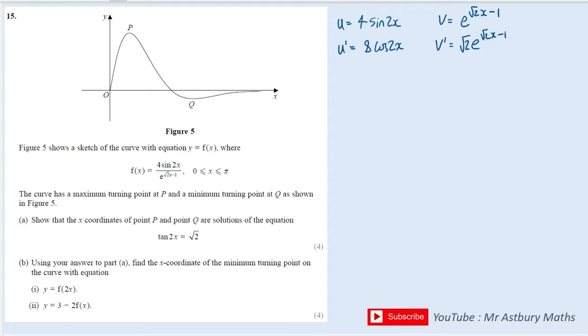Okay, now what I need to do is use the quotient rule. Now the quotient rule states that the derivative function is equal to v, which is e to the root 2x minus 1, multiplied by du, which is 8 cos 2x,